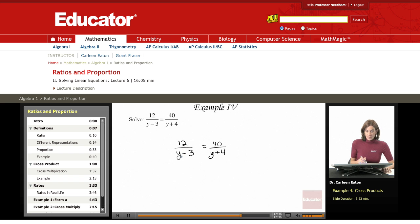This time we have 12 over y minus 3 equals 40 over y plus 4. Same as always, cross multiply: 12 times y plus 4 equals 40 times y minus 3. Now we have the same kind of equation that we've worked with before, so first I'm going to find the cross products.